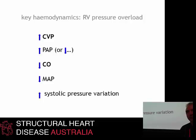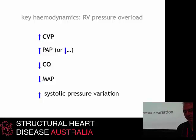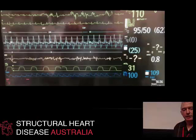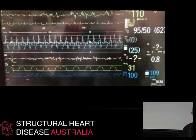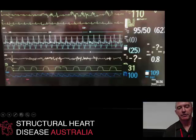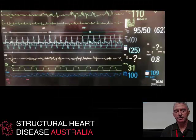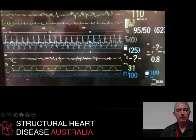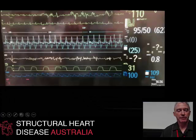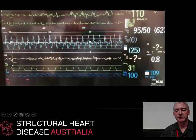Mean arterial pressure will also start to fall as decompensation becomes established, and the arterial waveform has a characteristic appearance — you get an increase in systolic pressure variation. Here's an example: a young patient with severe tricuspid regurgitation and an associated pulmonary embolism. The CVP is quite high at 25 with a prominent V wave. And look at the arterial waveform — there is marked systolic pressure variation with positive pressure ventilation, because the preload to the left ventricle is decreased.